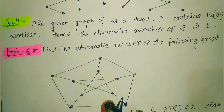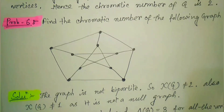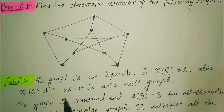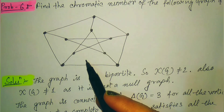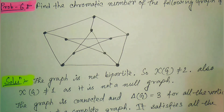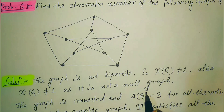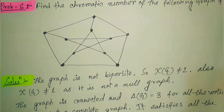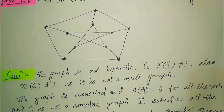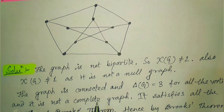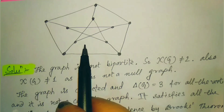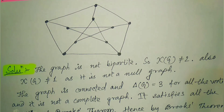One more example: find the chromatic number of the following graph. We observe that this graph is definitely not a bipartite graph. Since it is not bipartite, its chromatic number is neither 1 nor 2. If a graph is a null graph, its chromatic number is 1; if bipartite, it is 2; otherwise it is more than 2. This graph is connected.